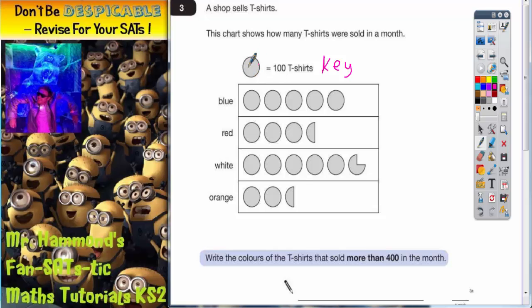So one full circle is worth 100 t-shirts. So every full circle is worth 100. You might as well write hundreds onto all the full circles. Like this.